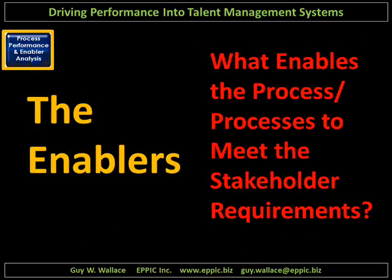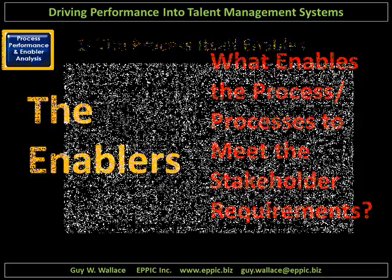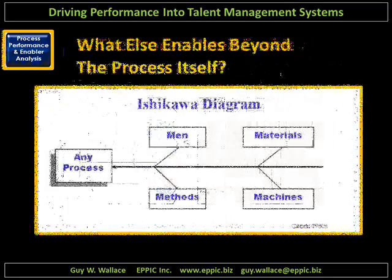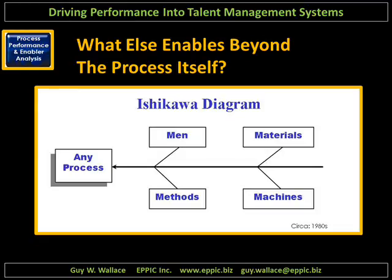There are enablers that enable the process or processes to meet those stakeholder requirements. The process itself can be mapped or modeled using various formats. This presents two complementary views of process performance: a traditional swim lane process map, and the performance model view. The performance model is a format that I've been using since 1979. What enables the processes, according to the Ishikawa diagram from the 1980s, would be the men, materials, methods, and machines. The Ishikawa diagram, also known as the cause and effect diagram or the fishbone diagram, has evolved over time with different language and a different number of enablers identified for any particular targeted process.